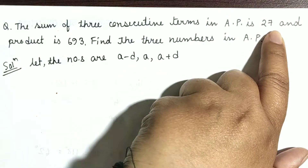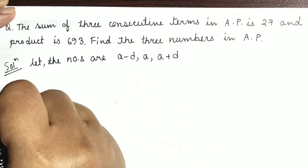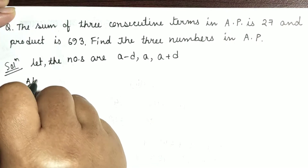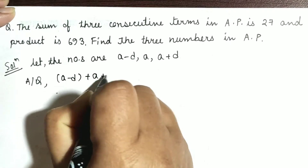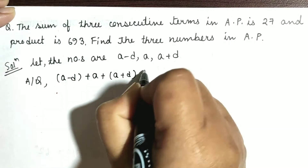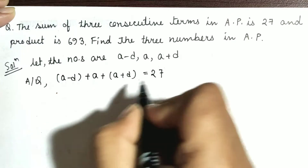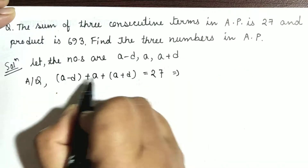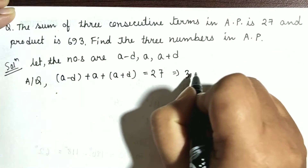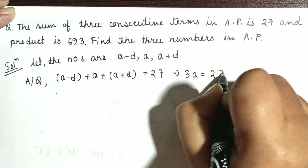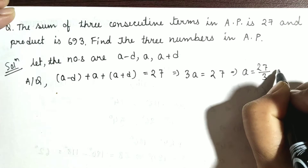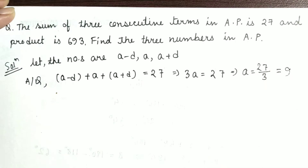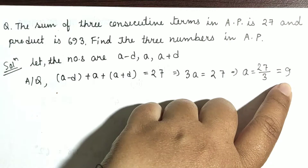The first condition is given: sum is 27. According to the question, we can write A-D plus A plus A plus D equal to 27. The D terms cancel, so the left-hand side gives 3A equal to 27. That means A is equal to 27 by 3, which is 9. We have got the value A equal to 9.